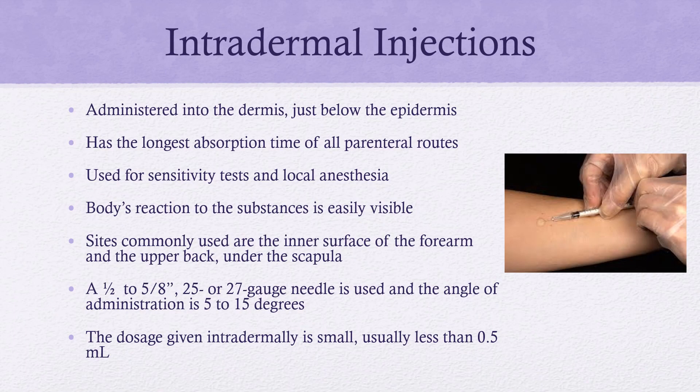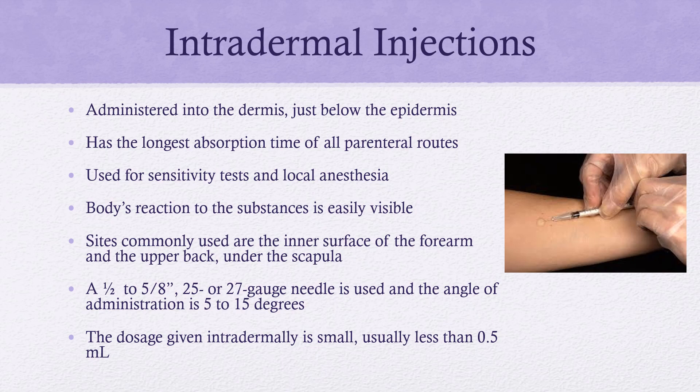Intradermal injections have the slowest absorption rate and are how we perform TB tests and allergy testing. We use this route because we don't want the patient to absorb the medication quickly — if absorbed too fast, they may have a systemic reaction. The maximum amount you can give is 0.5 mL, but most of the time it will be less. All medication goes into a tiny wheal just underneath the skin, and make sure the bevel is up to allow that small bleb or wheal to appear.